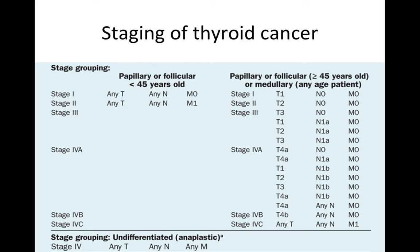Thyroid cancer staging differs based on age: less than 45 years versus greater than 45 years. Stage 1 is T1 tumour. Stage 2 is T2, N0, M0. Stage 3 involves different tumour sizes with nodal involvement. Stage 4A is variable tumour and nodal sizes. Stage 4B is the largest tumour size with any lymph node involvement. Stage 4C is distant metastases irrespective of tumour or node. This staging applies to papillary and follicular thyroid cancer only. Anaplastic (undifferentiated) thyroid cancer is automatically stage 4 regardless of tumour, node, or metastasis status.